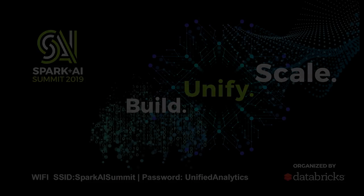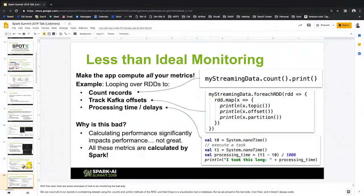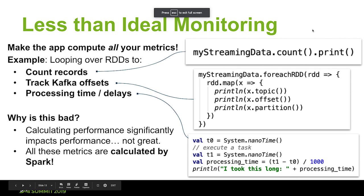We had a brief technical difficulty with the presentation. Back to where we were — the second bad approach is tracking Kafka offsets. You can get the Kafka offset from a given message, but that requires looping over every single RDD to then get the max. And for processing time and delays, we had some rather naive tracking where you start with a system time, execute a task — which would have to be an action, not a transform — and then print out the math when it's done.